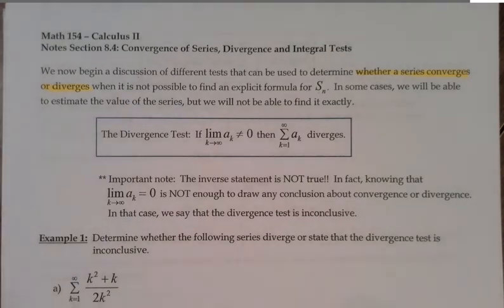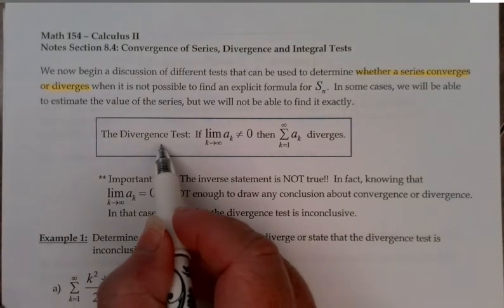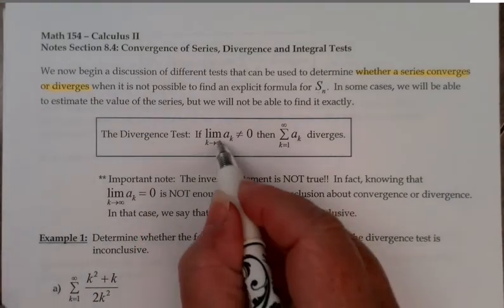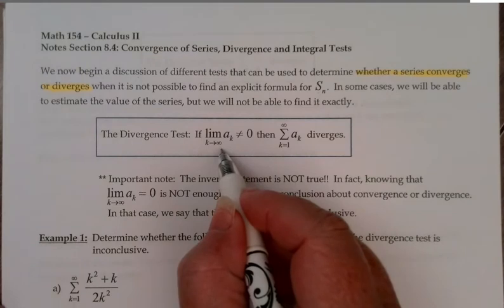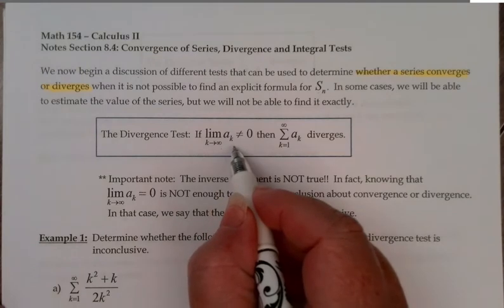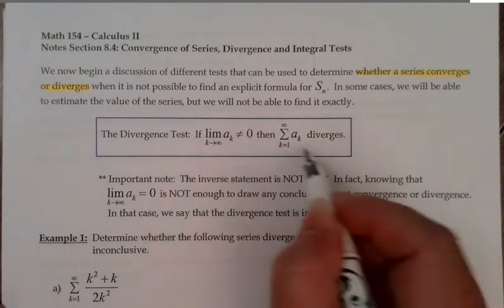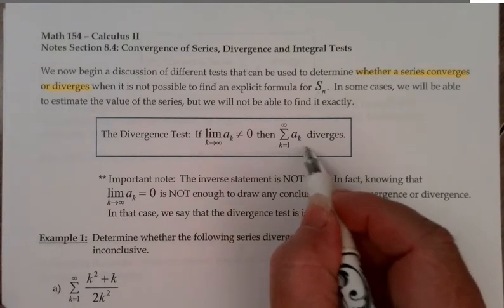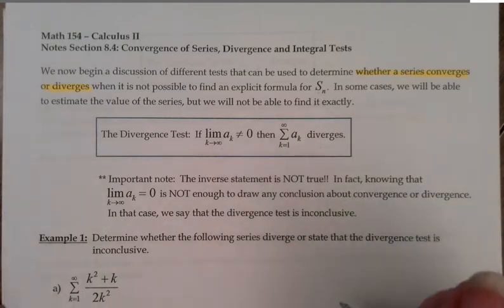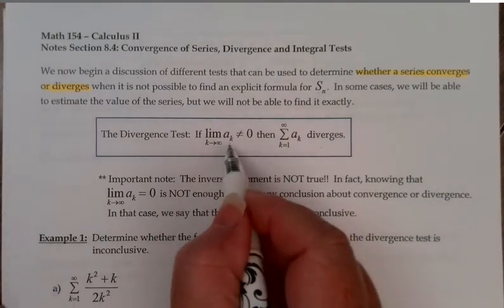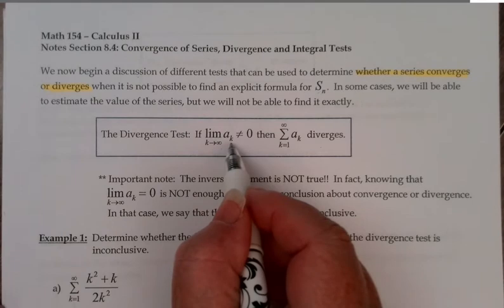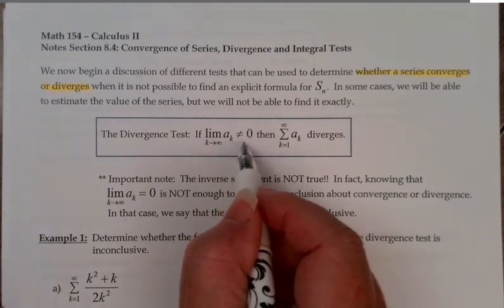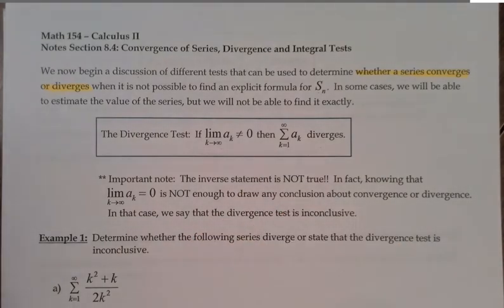Here's the first one, called the divergence test. If the limit as k goes to infinity of a sub k is not equal to 0, then the infinite series summing the a sub k's diverges. Hopefully that kind of makes sense. If the terms themselves don't keep getting smaller and smaller and approaching 0, there's no way that when I add them up I'm ever going to get a finite value.